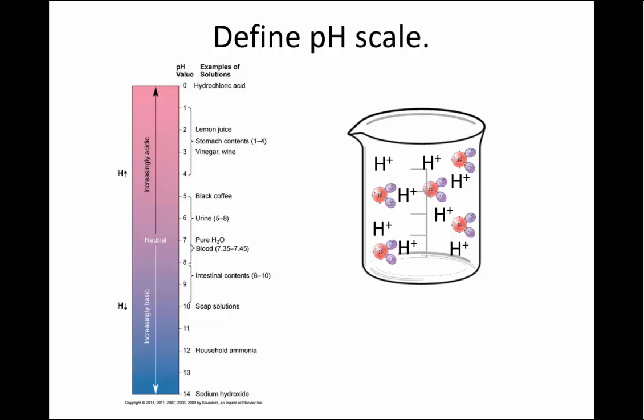If we were to look at stomach acid, let's say at a pH of 2, it's actually 3 steps from black coffee, and so it's 10 times 10 times 10, or a thousand times more acidic than the black coffee.